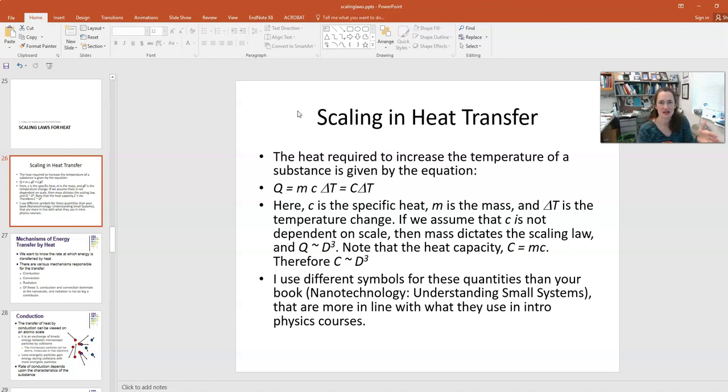And the mass, we saw in a previous lecture, is proportional to the density of the material, which is a material property that doesn't scale as the size of the particle changes, times the volume of the particle. Now, in previous lectures, we spoke of a characteristic dimension D. The characteristic dimension describes the phenomena that we're looking at with respect to the size of the particle or substance. So D would be the characteristic dimension or the characteristic size that controls that phenomena for your material. This means that C is proportional to D cubed, because the heat capacity is proportional to the mass, which is proportional to the volume, and the volume would be the characteristic dimension cubed.